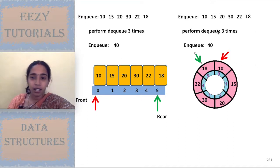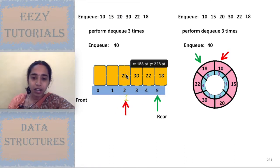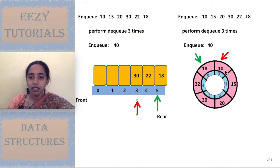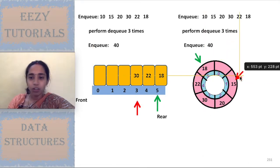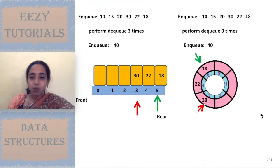Now step two: perform dequeue three times. To dequeue, we delete the element and move the front pointer to the next position. In the linear queue, I perform the first dequeue, second dequeue, and third dequeue — moving the front pointer each time. The same is done for the circular queue: three dequeue operations, deleting elements and advancing the front pointer.